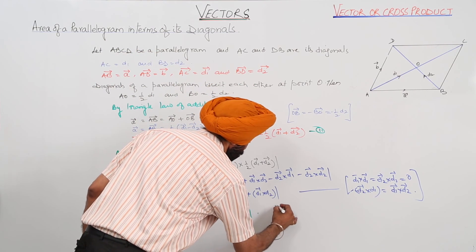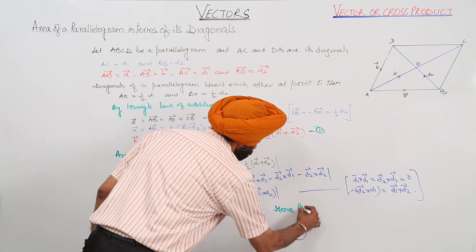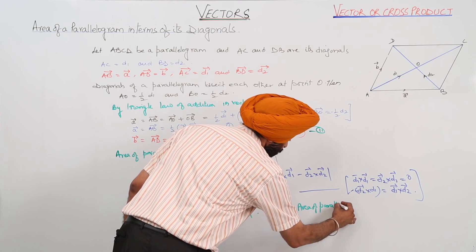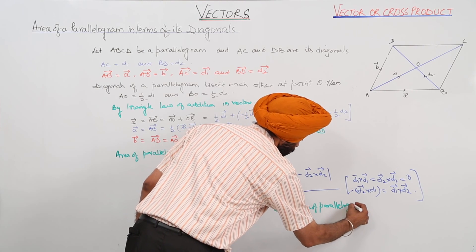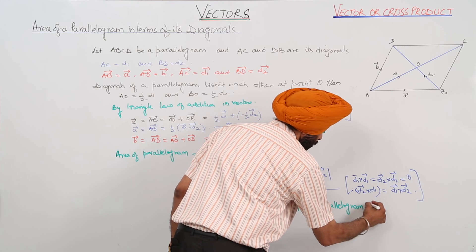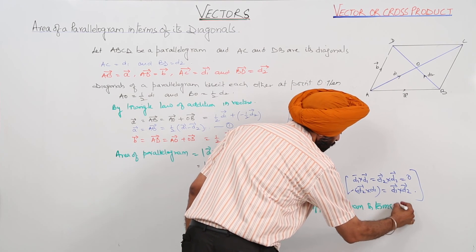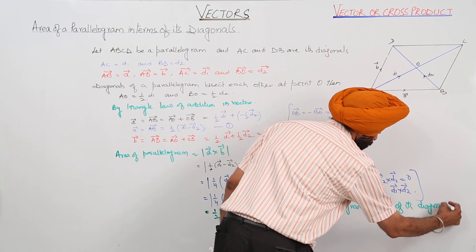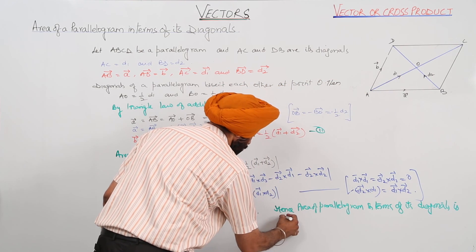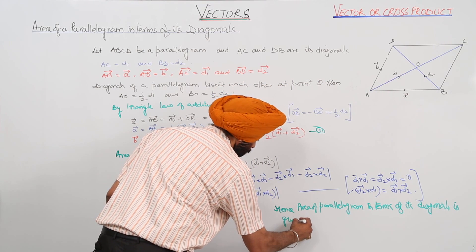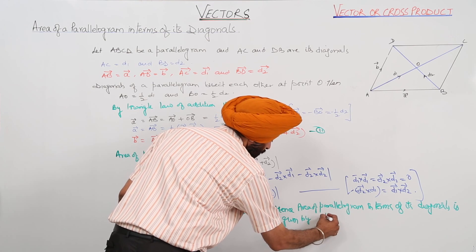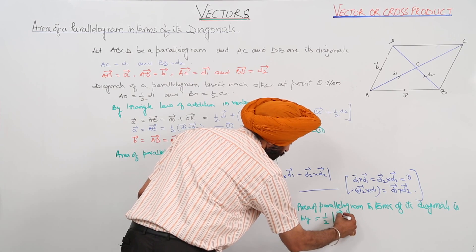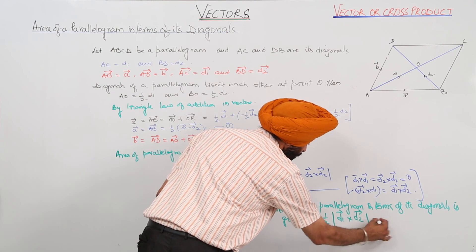Hence, the area of a parallelogram in terms of its diagonals is given by half the magnitude of the cross product of D1 and D2, that is, area equals one-half times the magnitude of vector D1 cross vector D2.